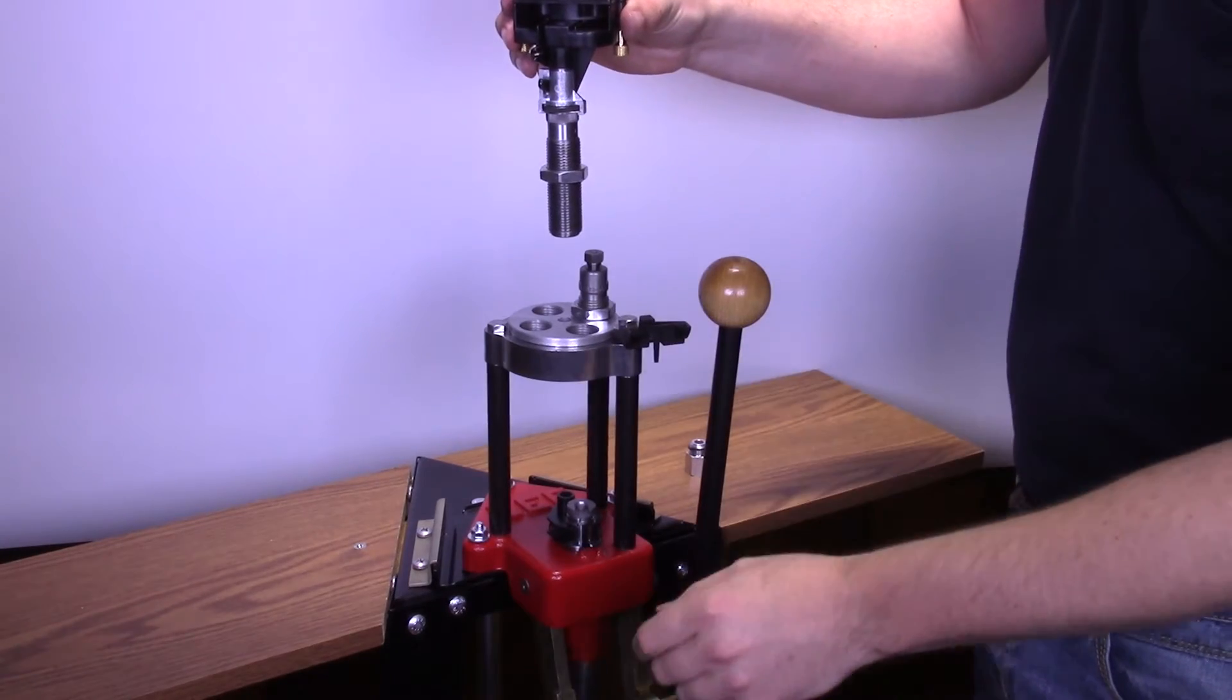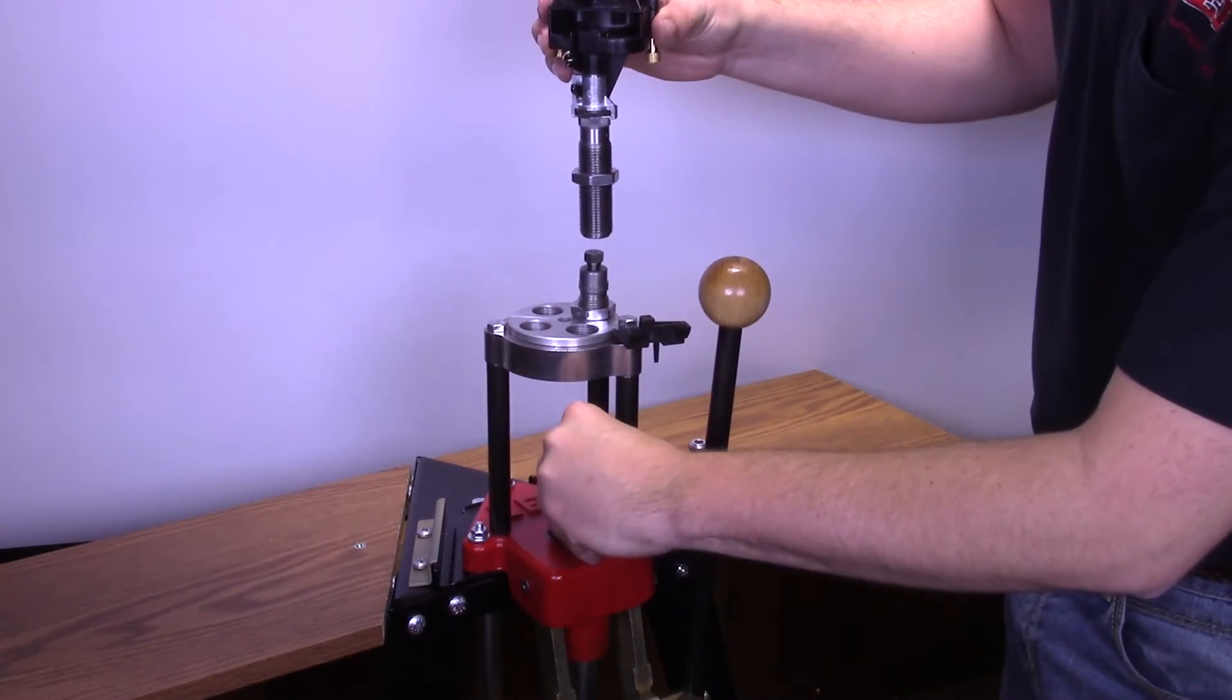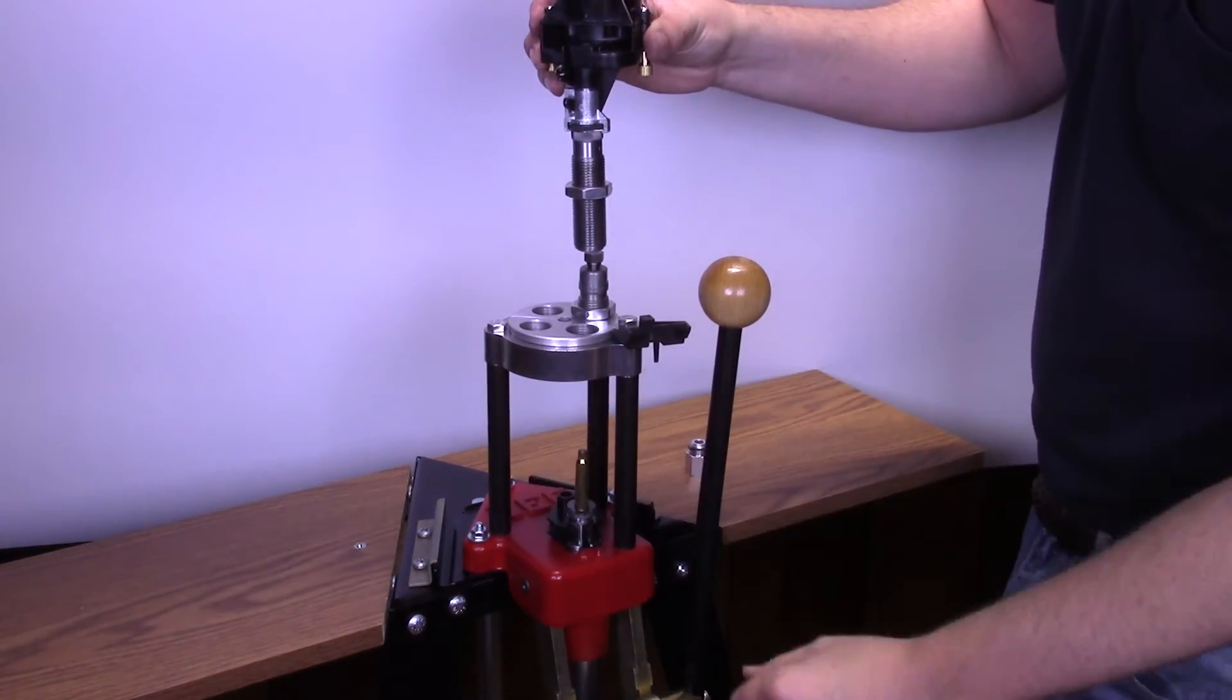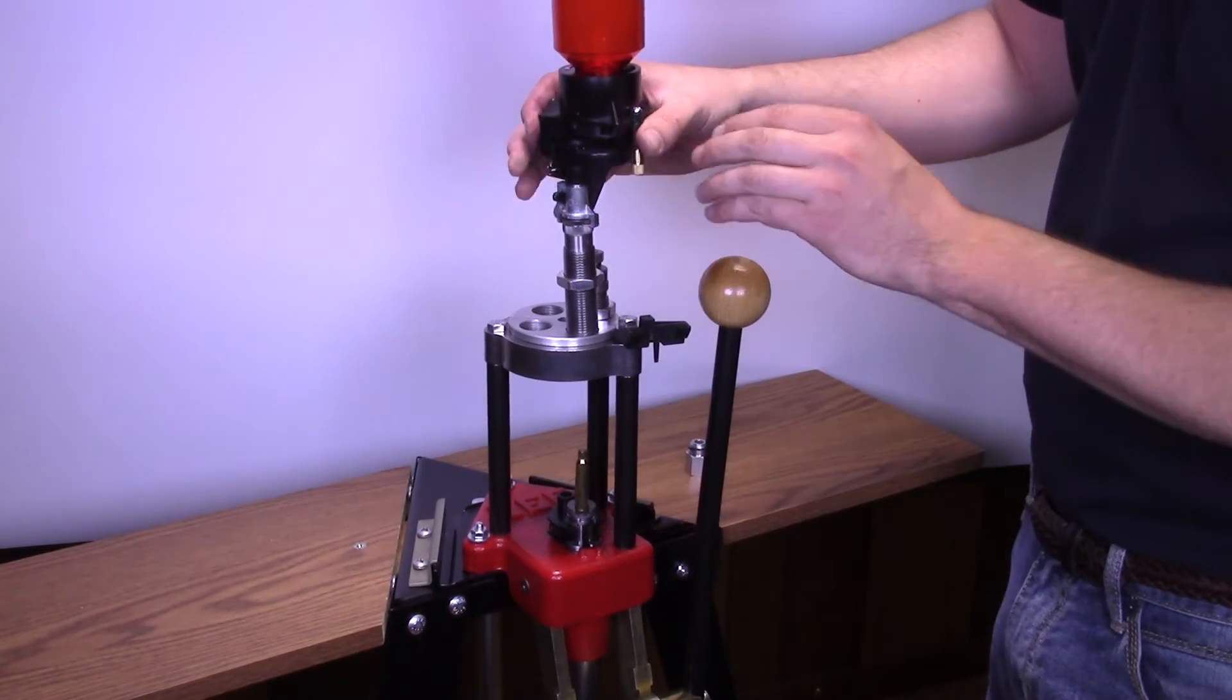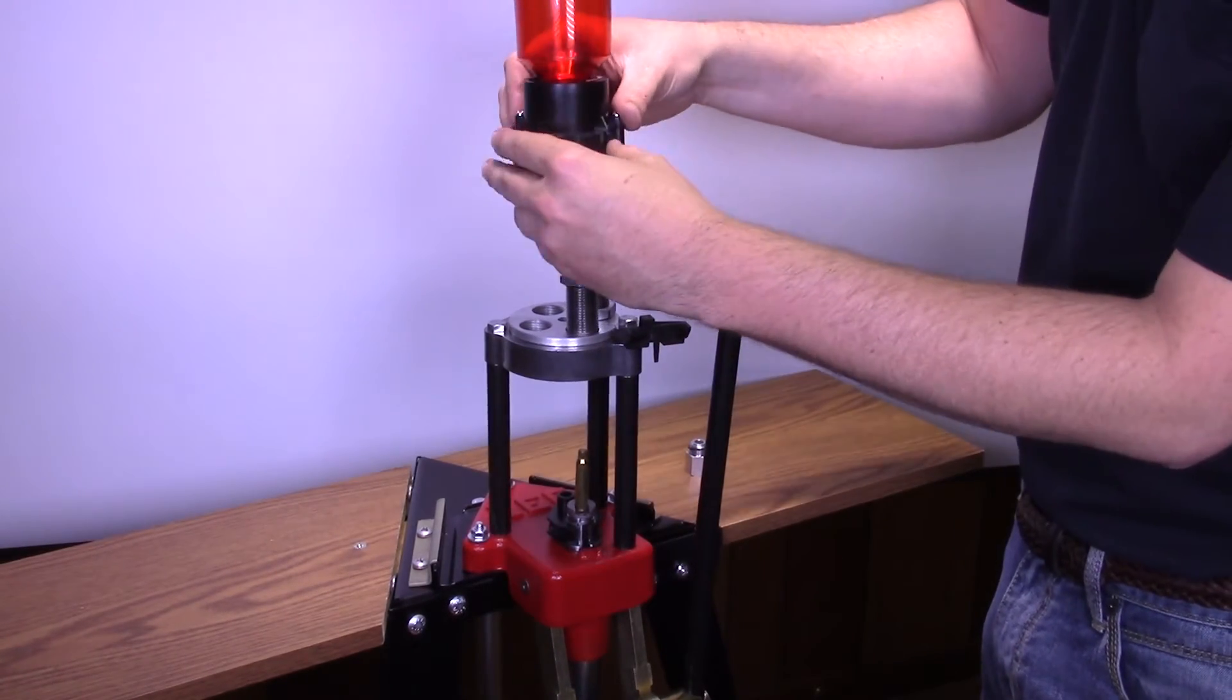Now, insert an empty case into the shell holder. Adjust the measure with the empty case in the shell holder and the ram fully raised.